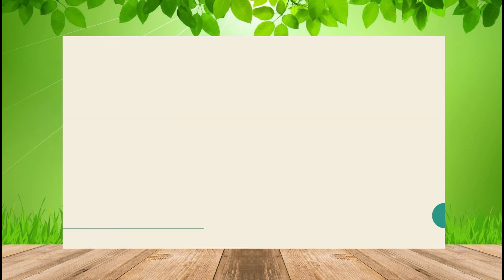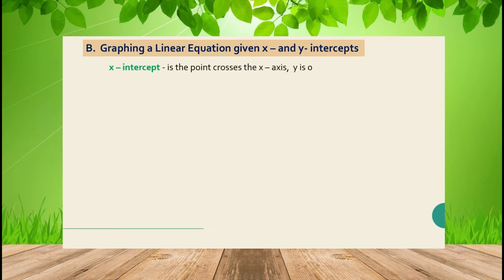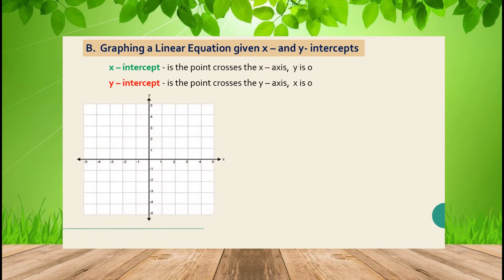Let us now cover the second method: graphing a linear equation given the x and y-intercepts. The x-intercept is the point where the line crosses the x-axis, where y = 0. The y-intercept is the point where the line crosses the y-axis, where x = 0.